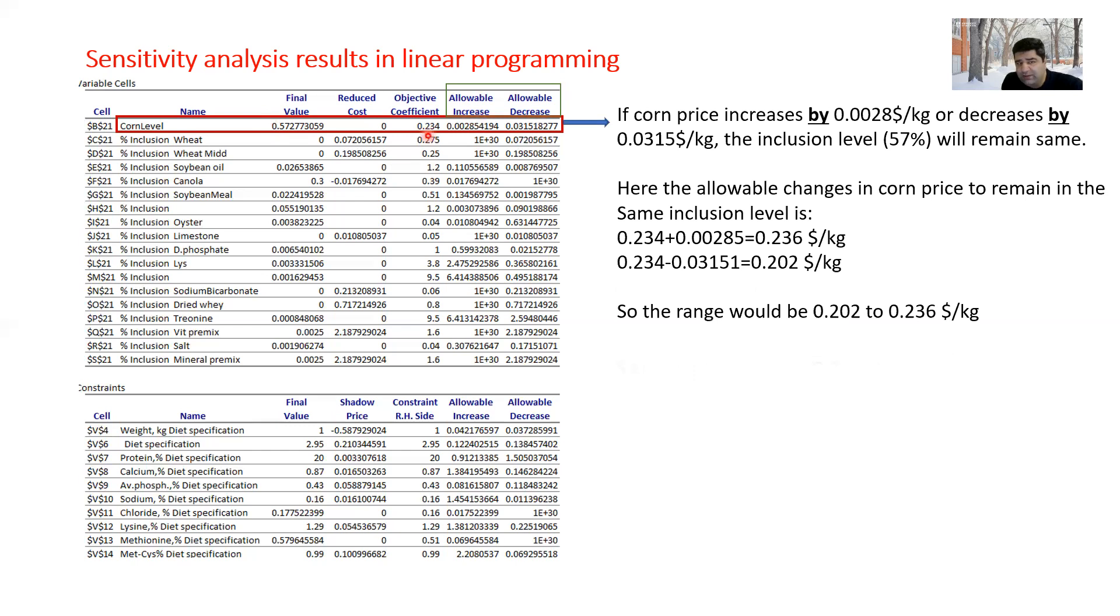What was the corn price? 0.234 dollar per kilogram. If it increases by this amount, it would come to 0.236 dollar per kilogram and if the corn cost comes down by this amount, it would come to 0.202 dollar per kilogram. The range for the corn price would be 0.202 all the way to 0.236 dollar per kilogram. It means that if the corn price fluctuates within this range, then its inclusion rate in my diet, which was 57 percent, will remain the same.